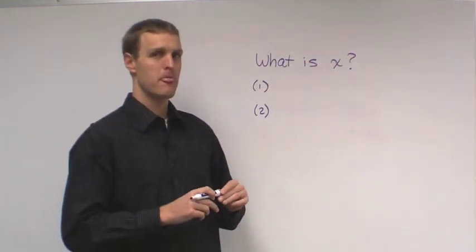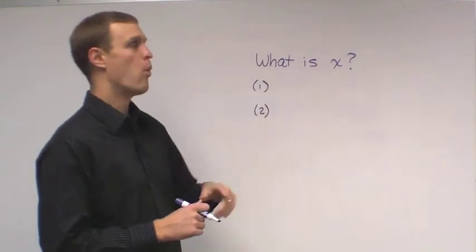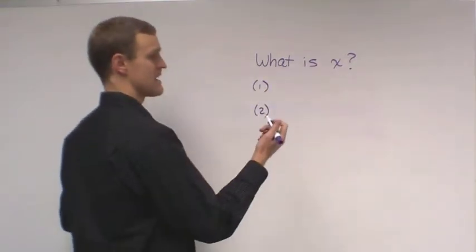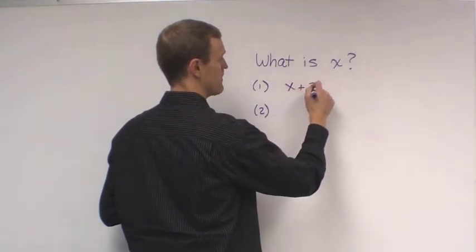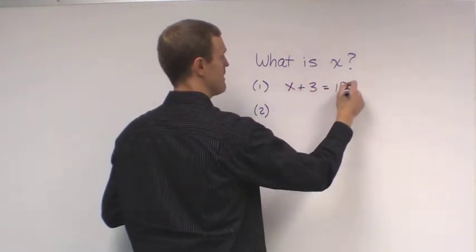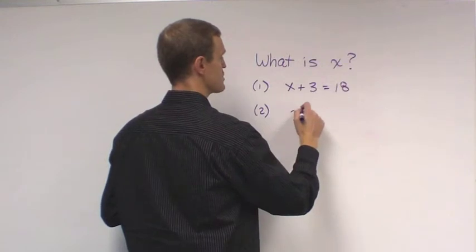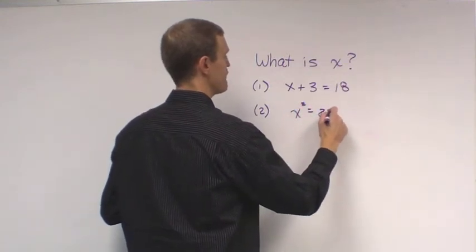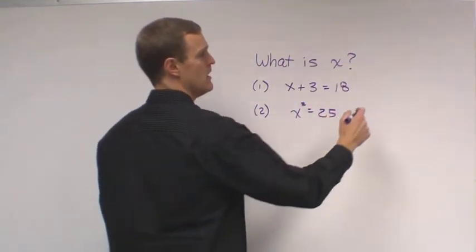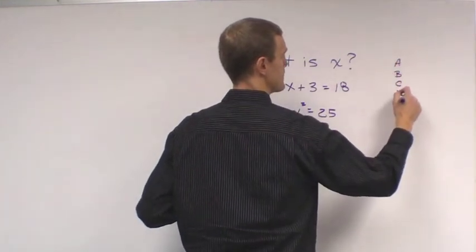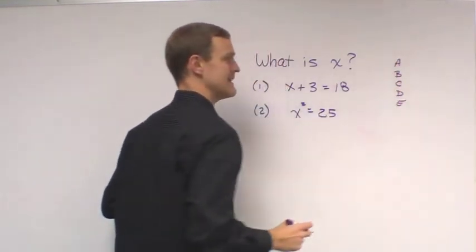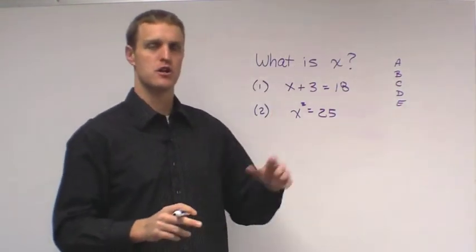Let's take a look at an example. Let's say this were the question: What is x? And then let's say statement number one is x plus 3 equals 18. And statement number two is x squared equals 25, right? And remember, we always draw our mock answer grid on our scratch paper so we can systematically eliminate answer choices as we make determinations.